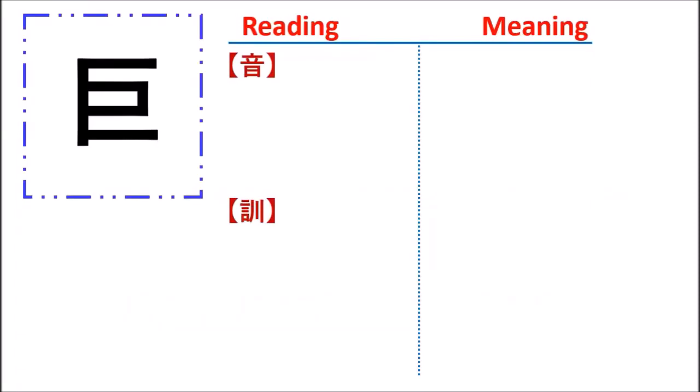As you see here, the first kanji in Japanese, there are two pronunciation sounds.